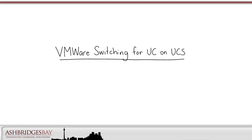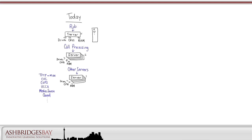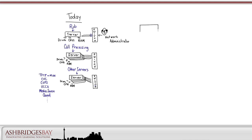In this video, we discuss VMware switching for UC on UCS. In UC on UCS Benefits and Technologies Part 2, we discussed how in today's model, servers running specific apps are connected to switch ports. We know which applications are connected to which switch ports, and all the switching is done in the switches — none of it is done in the servers. In a VMware environment, ESXi servers host multiple VMs and there are ESXi vSwitches deployed inside the servers. We now have switching done both inside and outside of the servers, and we need to understand how this works.